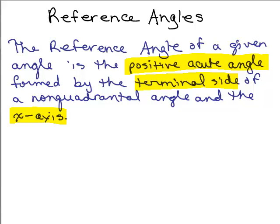In this video, I'm going to go over what a reference angle is and how to find them. Here's the formal definition: the reference angle of a given angle is the positive acute angle formed by the terminal side of a non-quadrantal angle and the x-axis. So we're looking for an acute angle — something between 0 and 90 degrees — formed between the terminal side of the angle and the x-axis.